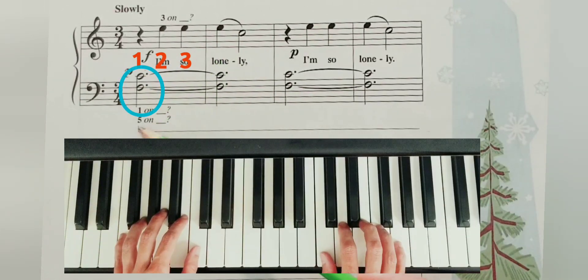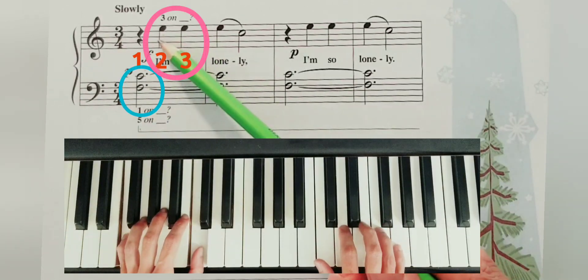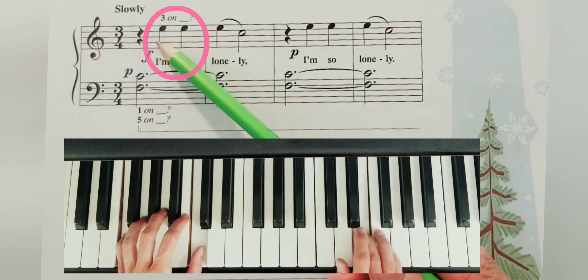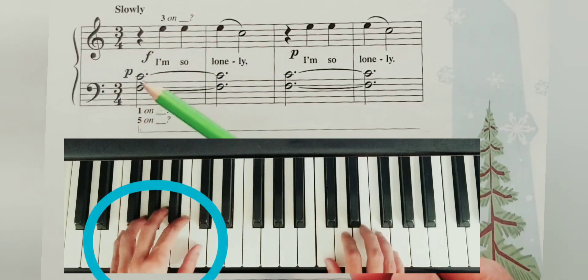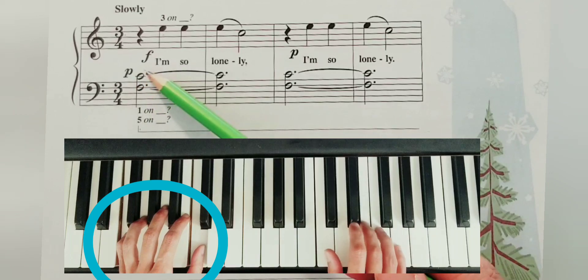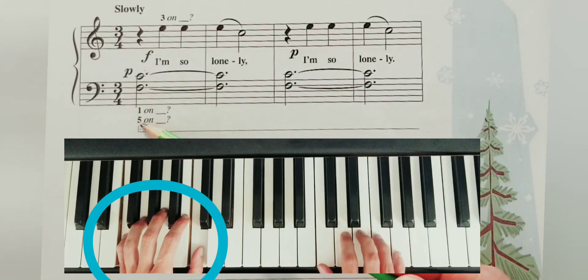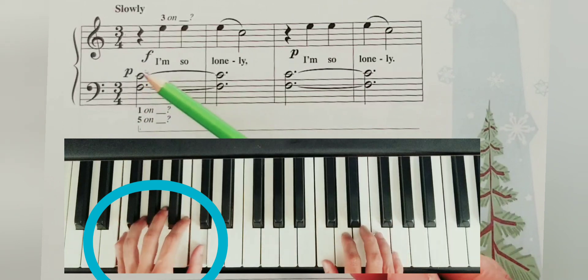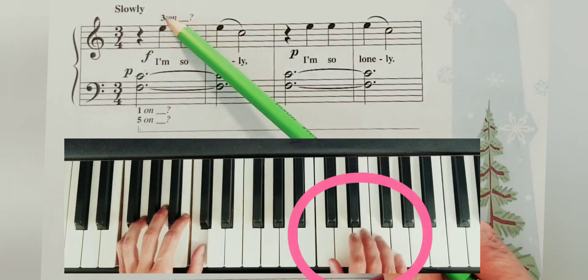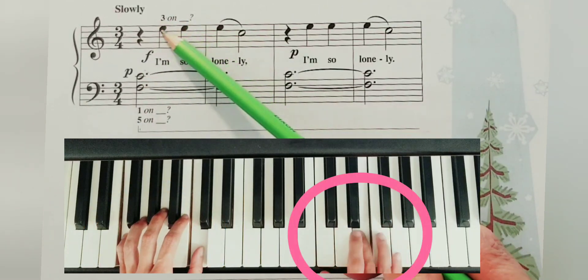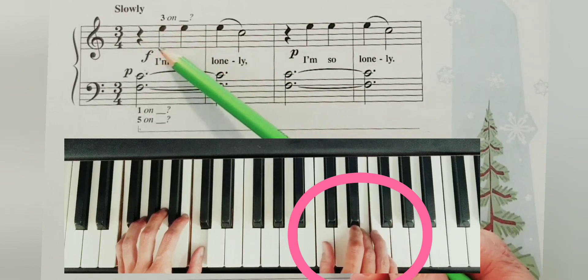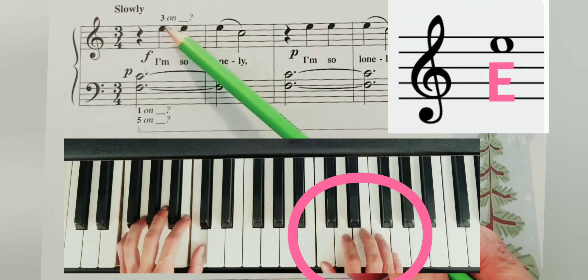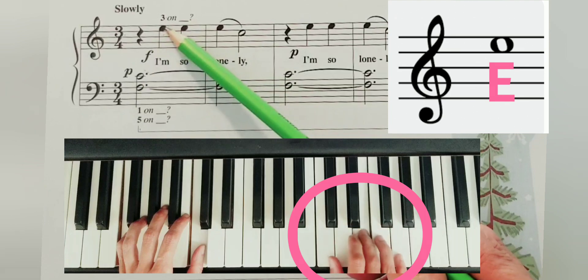Left hand will start playing and the right hand plays on count number two. Left hand will play on F and middle C: finger five on F, finger one on C. And right hand will play with finger three on treble E, on the fourth space of the treble clef.